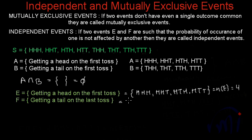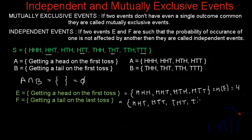The favorable outcomes of event F — getting a tail on the last toss — will be: {HHT, HTT, THT, TTT}. These are the four outcomes favorable to event F, and the cardinal number of this set is also equal to 4.